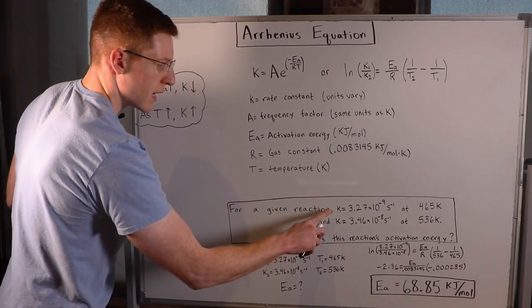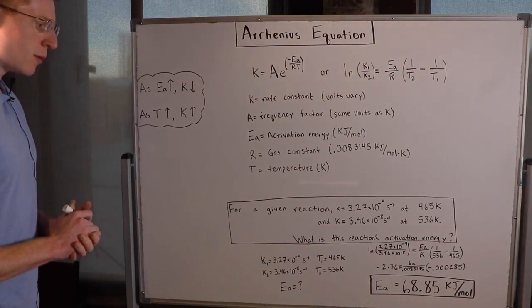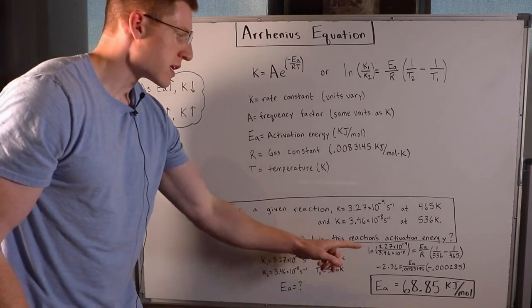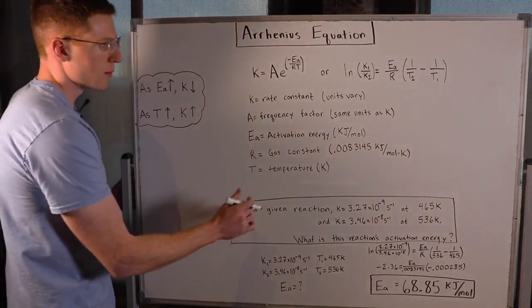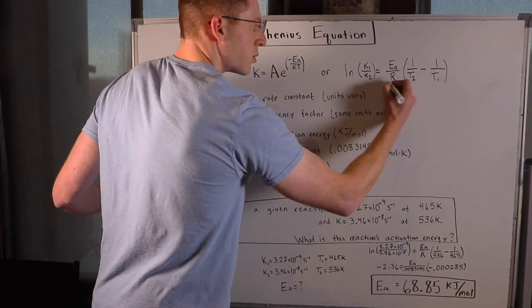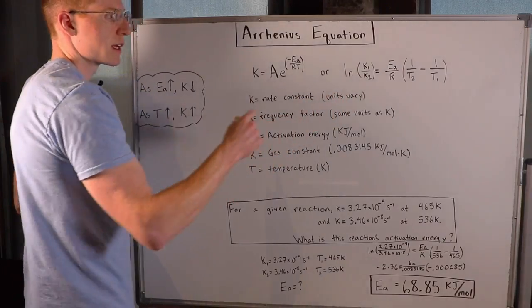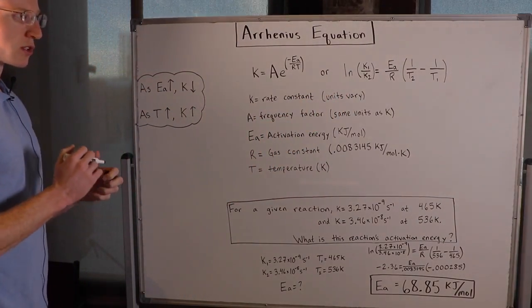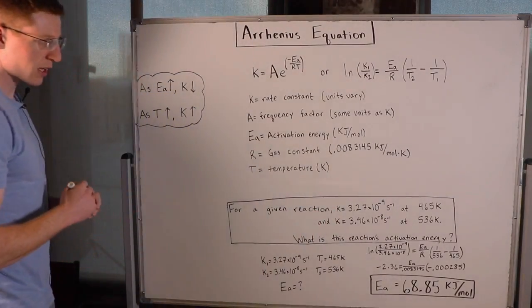The temperature went up and the rate constant also went up. They want to know the reaction's activation energy. This form of the Arrhenius equation is most useful because we have two k's, k1 and k2, and two temperatures, T1 and T2, and we're solving for Ea.